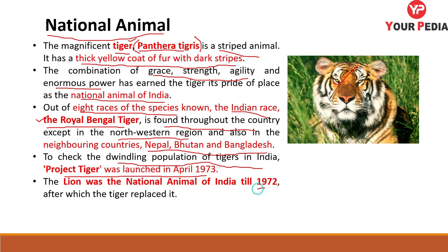Before the tiger, the lion was the national animal of India till 1972, after which the tiger replaced it. The Indian race of tiger is the Royal Bengal Tiger. Its scientific name is Panthera tigris. To conserve tigers, the Government of India launched Project Tiger.